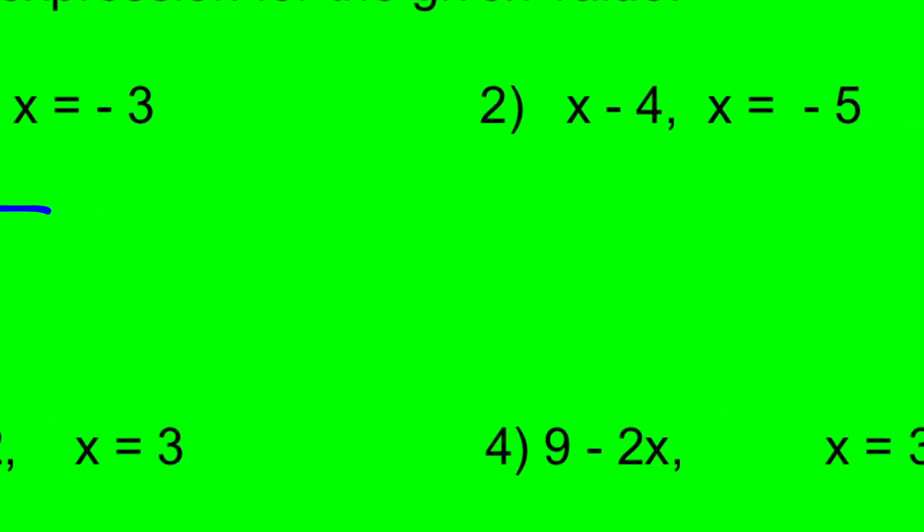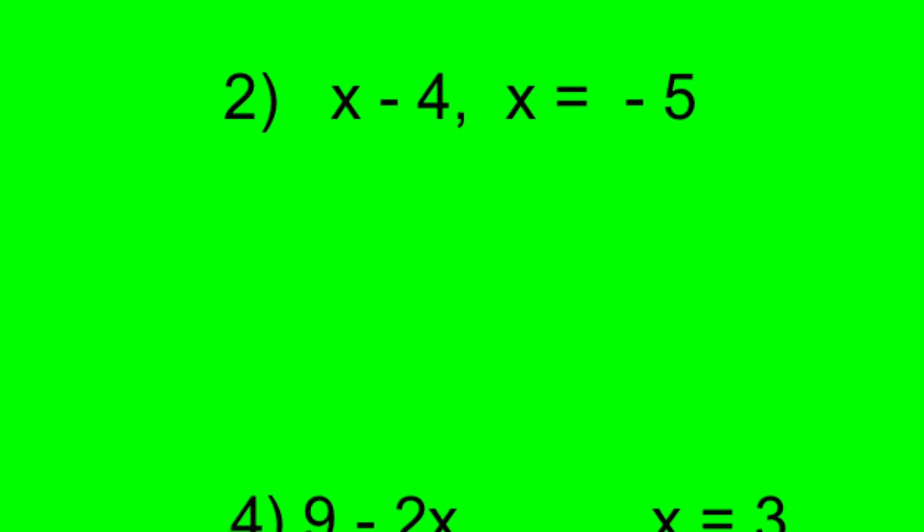Let's take a look at number 2. The expression is x - 4. And we're going to substitute in negative 5 for x. So I put an equal sign at the front of my step. I work down the page. Negative 5, minus 4. The signs are the same. I have 5 negatives. I have 4 negatives, so I add them up. And the answer is negative 9.